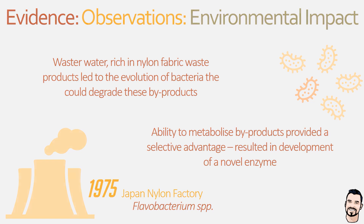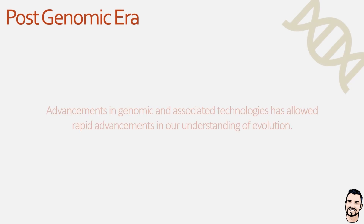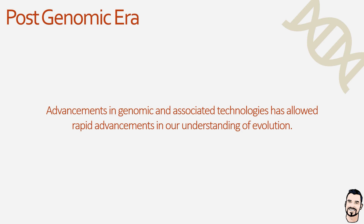And that wraps up our different evidence types for evolution. To end this video, I want to quickly talk about what we call the post-genomic era. Since we sequenced the first human genome, we have made significant strides in our knowledge and understanding of genetic information, shifting from simply identification of genes to understanding how they function and interact with one another as part of a complex biological system.